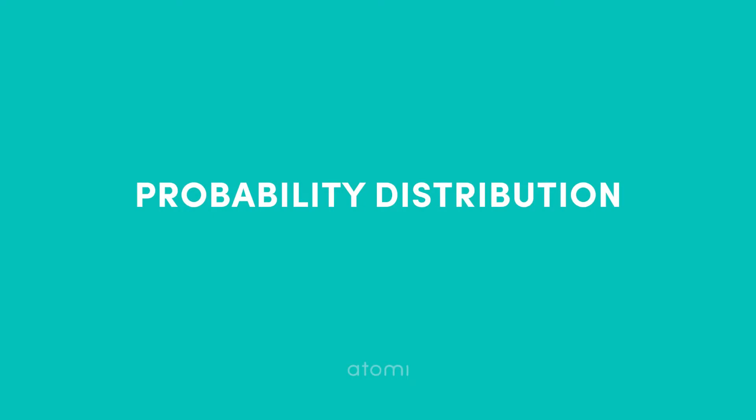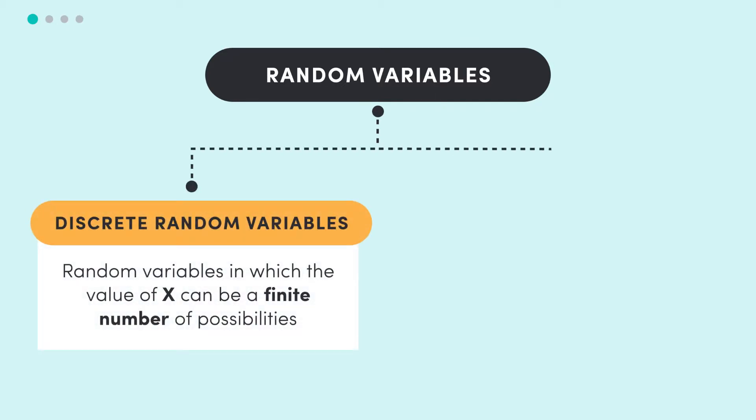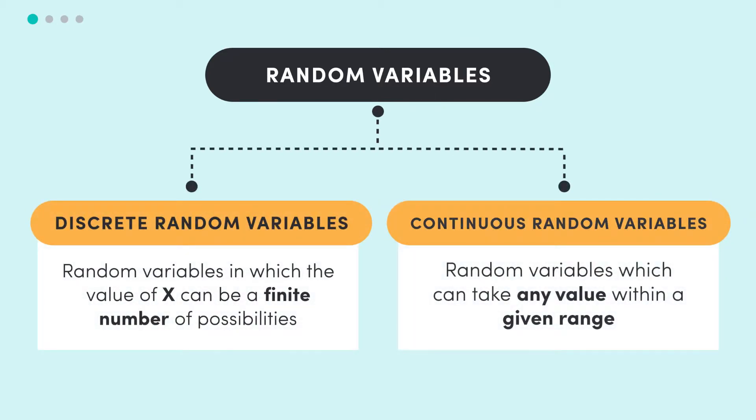So quickly as we're getting started, let's firstly recap the two types of random variables. Discrete random variables, where x can take a finite number of outcomes, and continuous random variables, where there's an infinite number of outcomes.